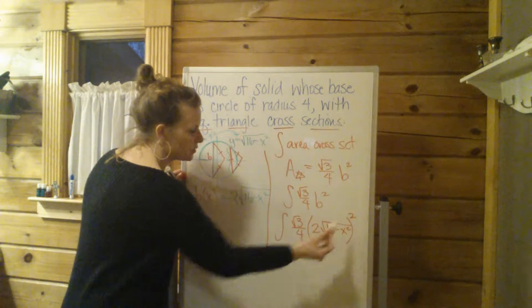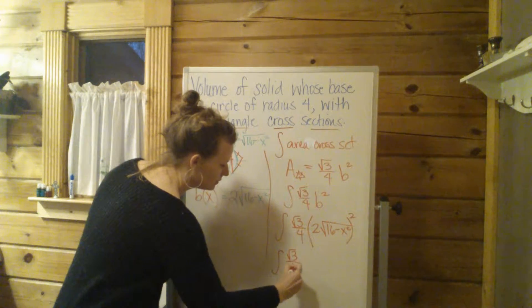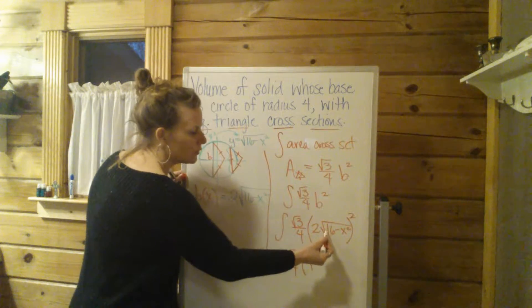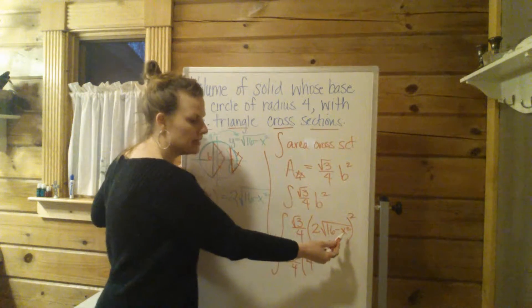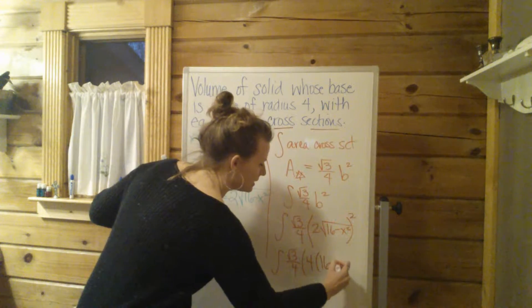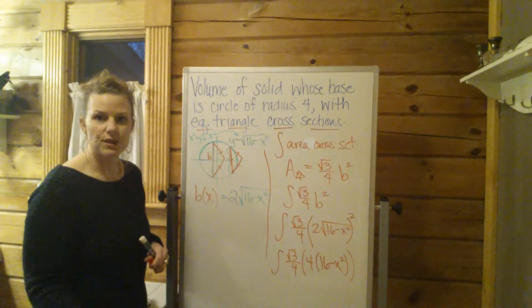So this 2 out in front squared, square root of 3, the 2 out in front squared becomes a 4. The radical 16 minus x squared, squared, the radical just goes away. So that becomes just plain old 16 minus x squared. So far, so good.